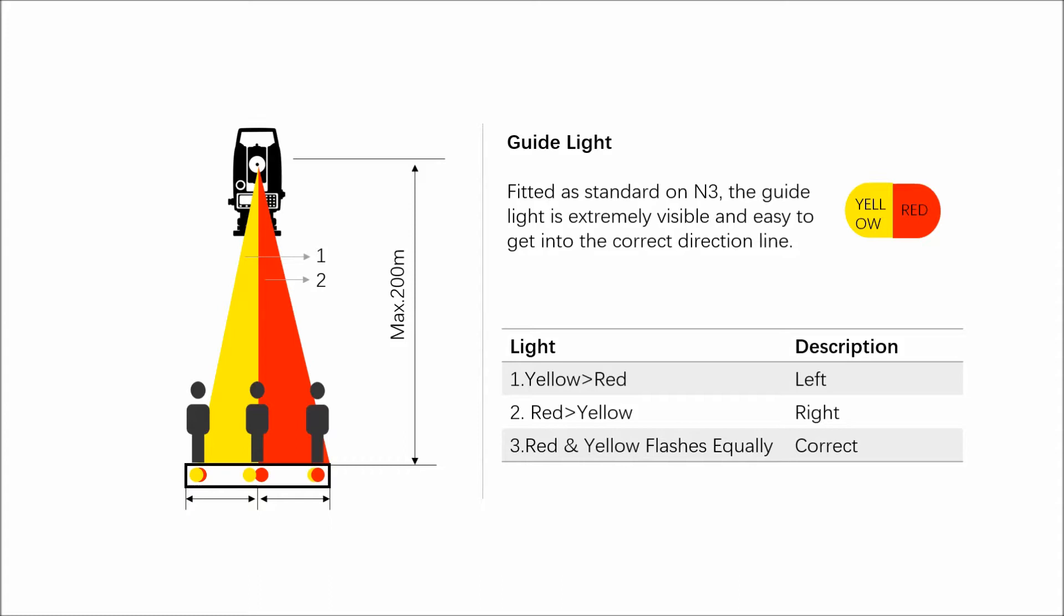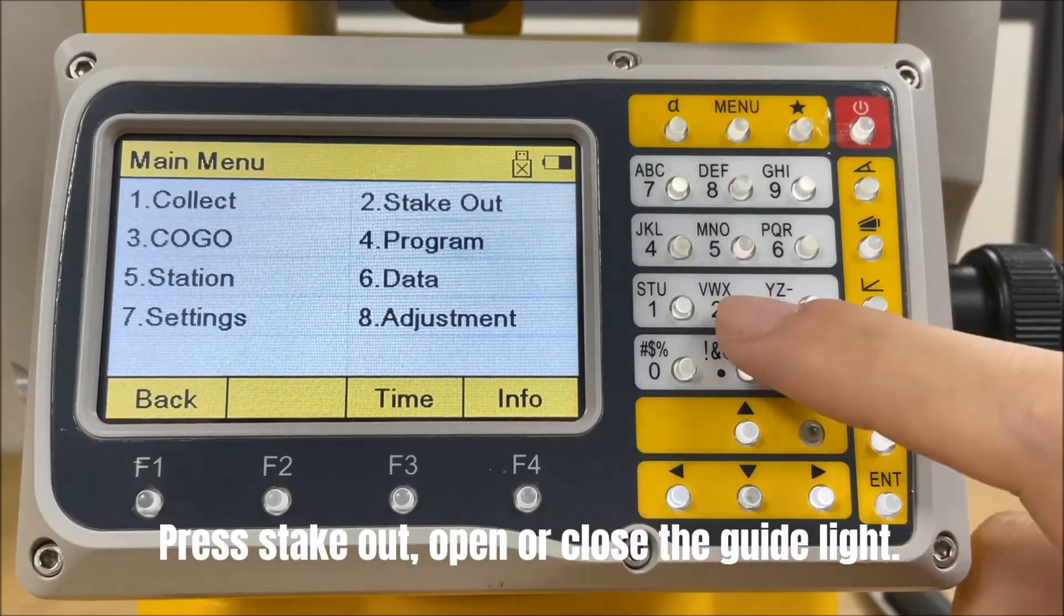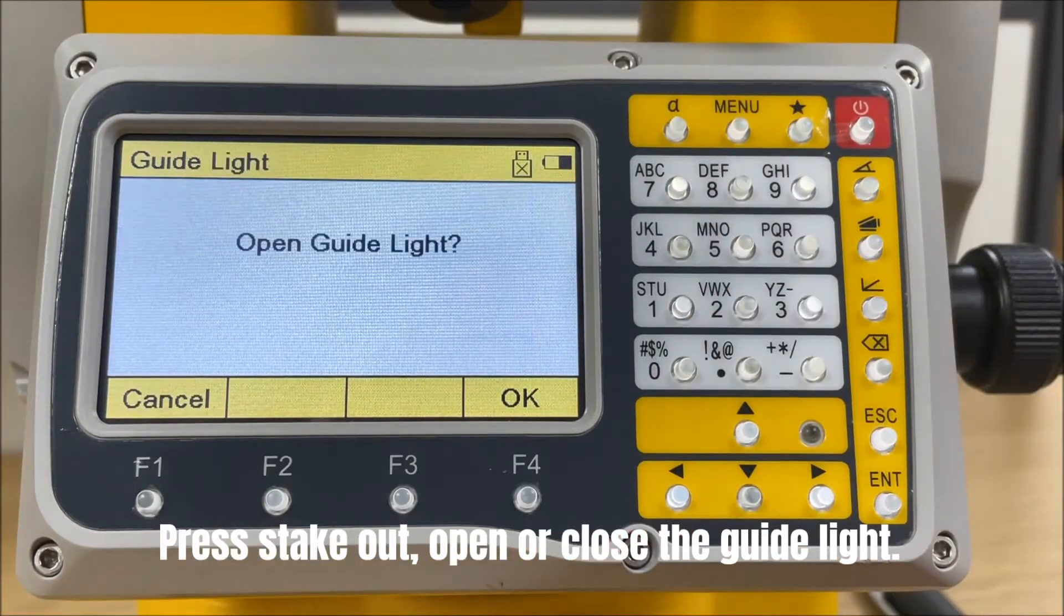The light points are visible up to a maximum distance of 200 meters. This is useful when setting out points. Press stake out to open or close the guide light.